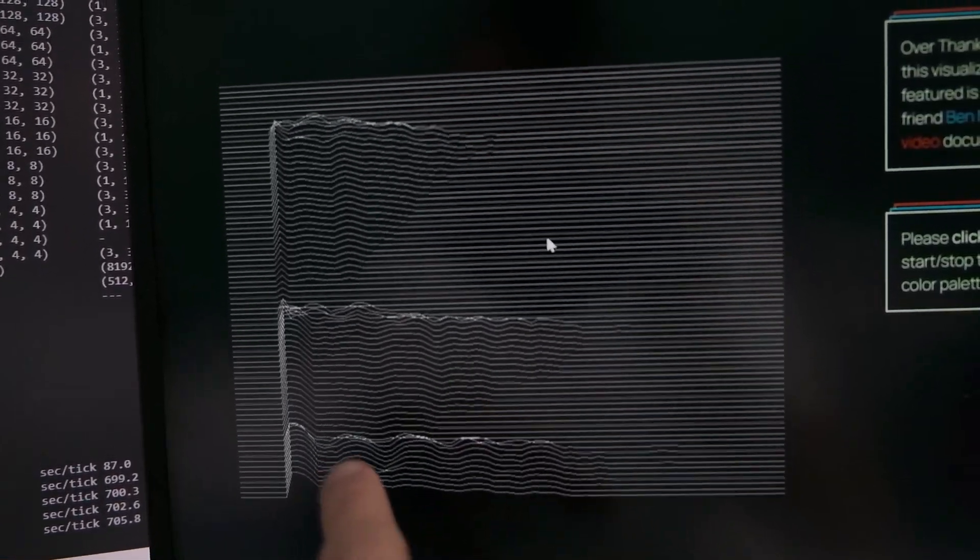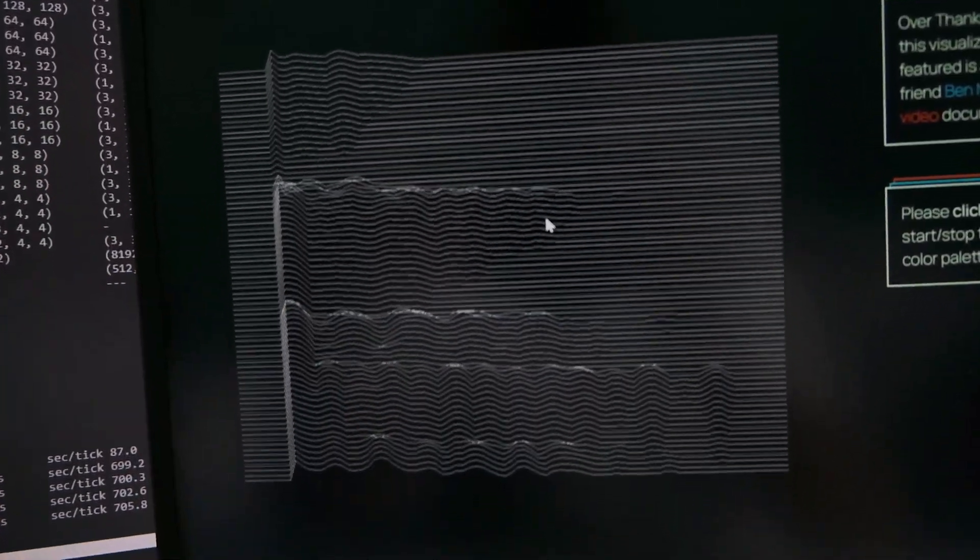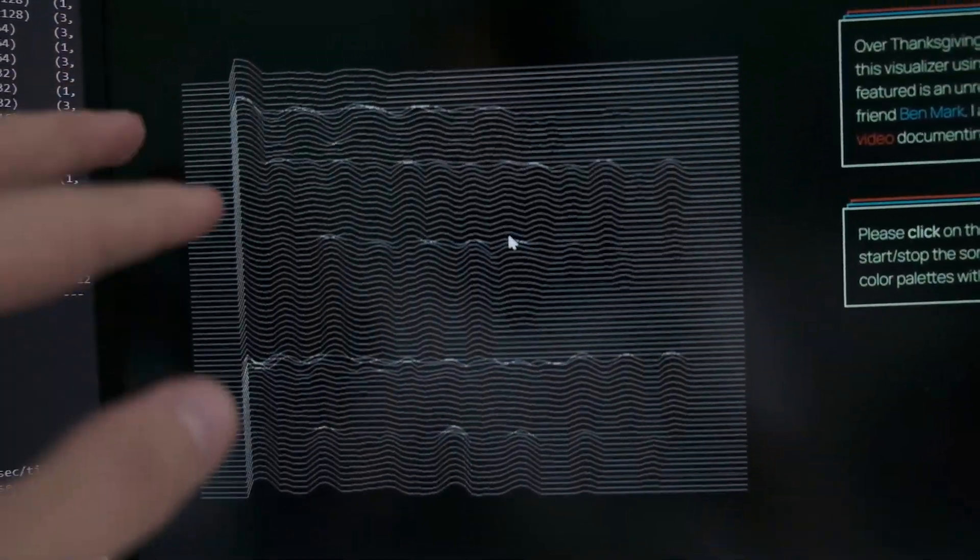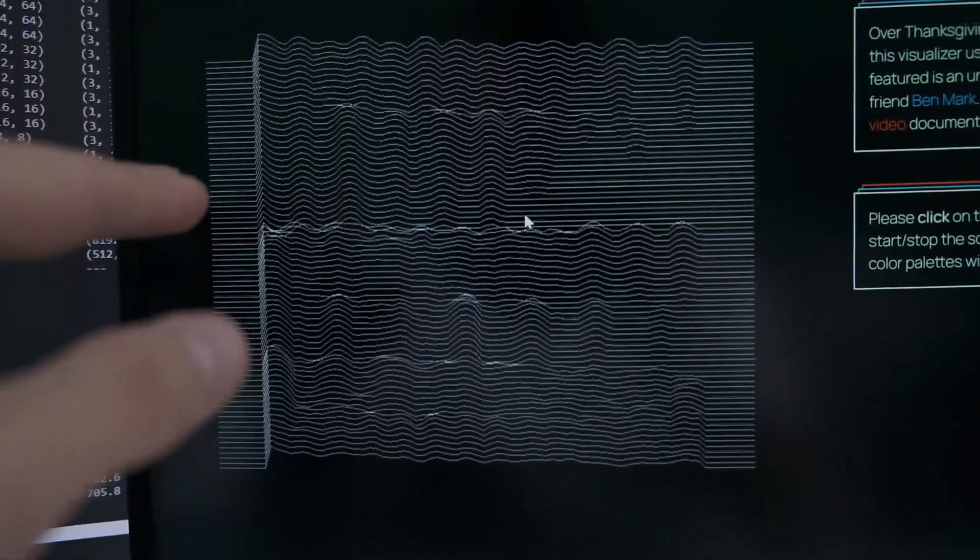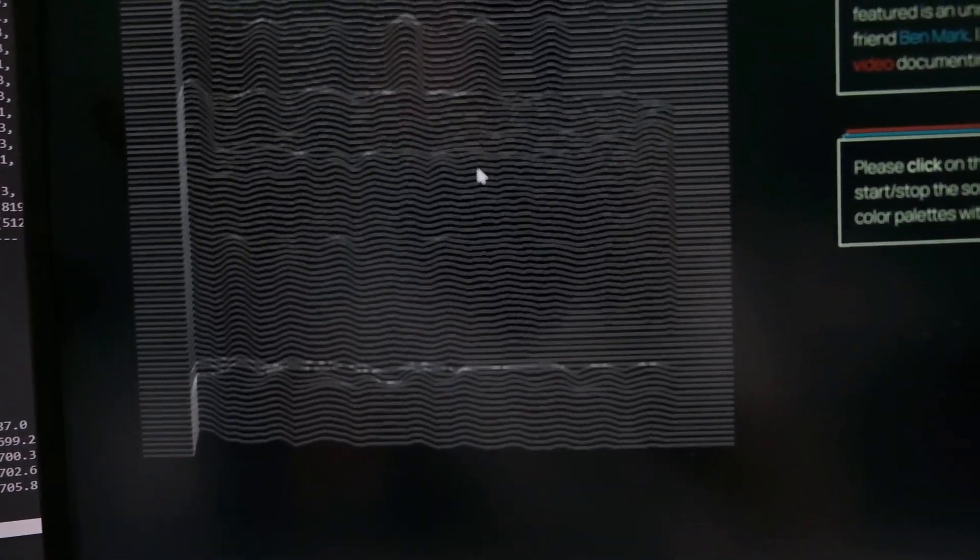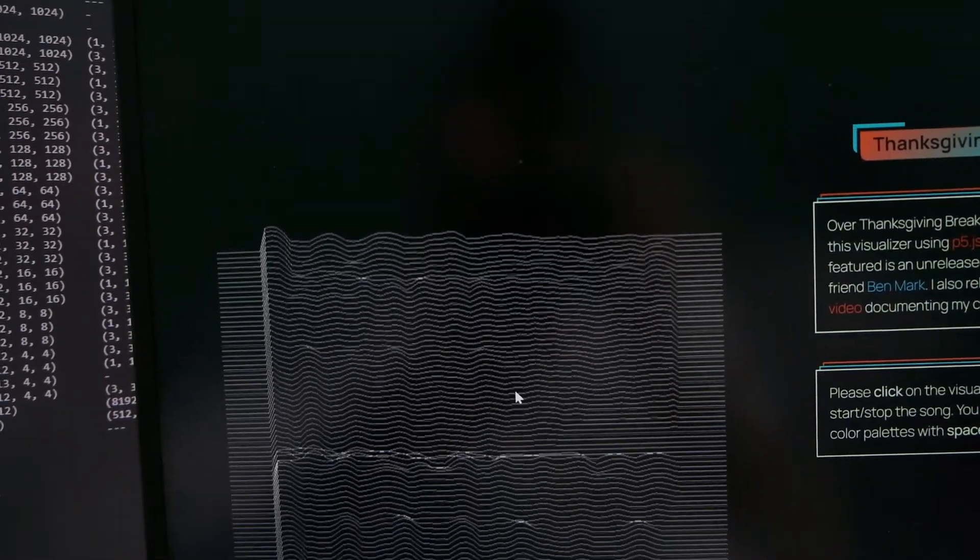So it is working, you know. It's doing the FFT. It's like the line like I want. But you probably can't tell on the camera, but looking at it, it flickers really badly. So yeah, I need to fix that. But for now, pretty good progress.